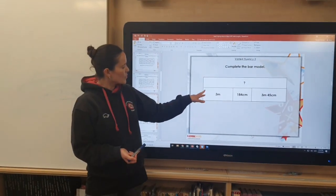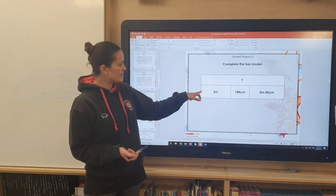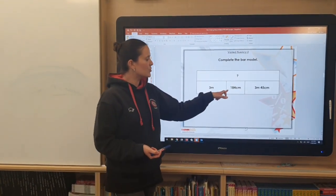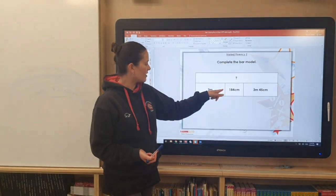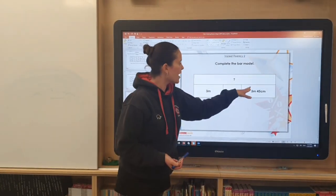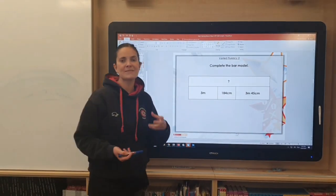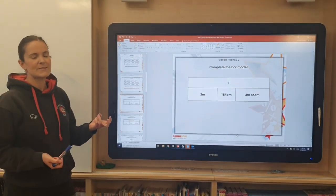So very similarly to the previous question I need to add up these three numbers. And if you look carefully you'll see we've got metres here, three metres. Then we move to a measurement in centimetres, 184. And then finally we have a measurement which combines metres and centimetres.